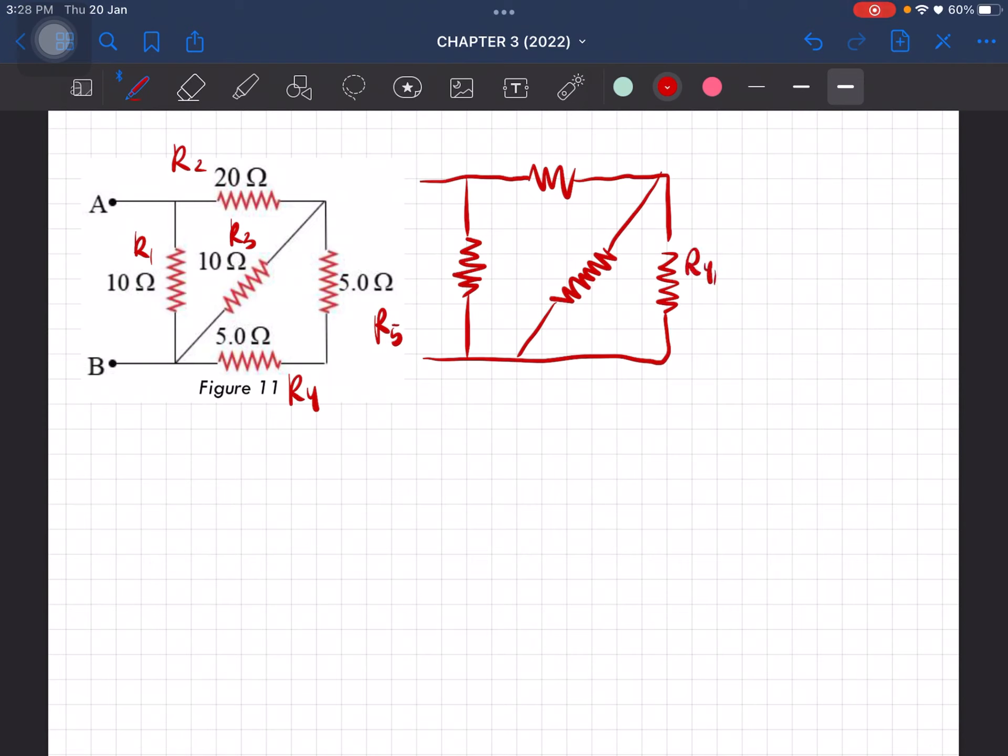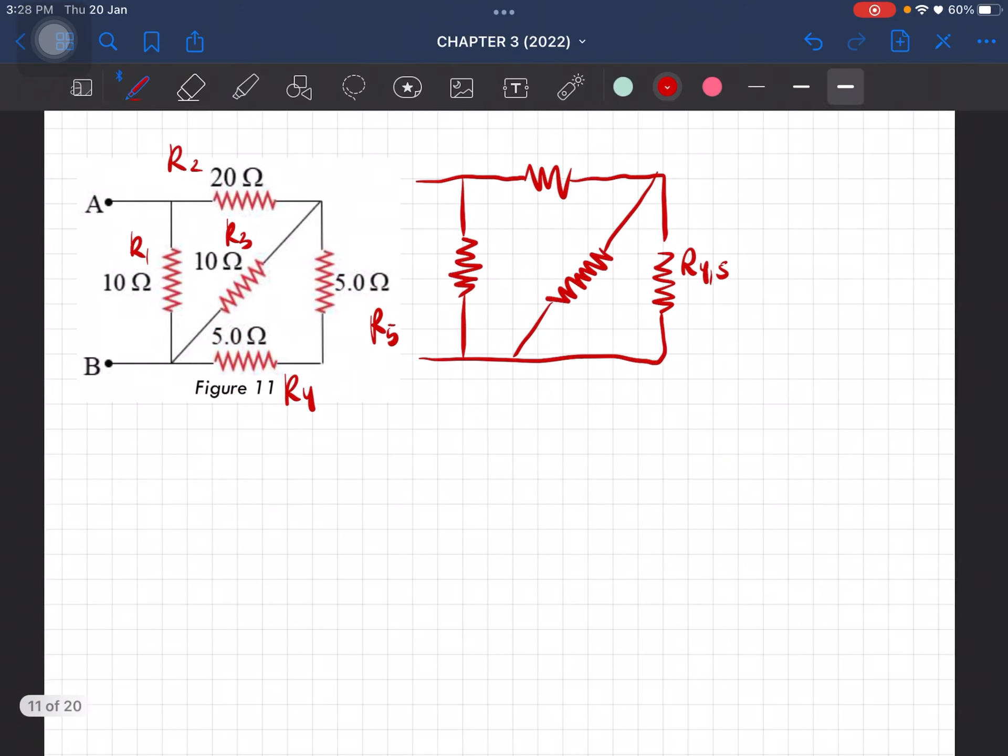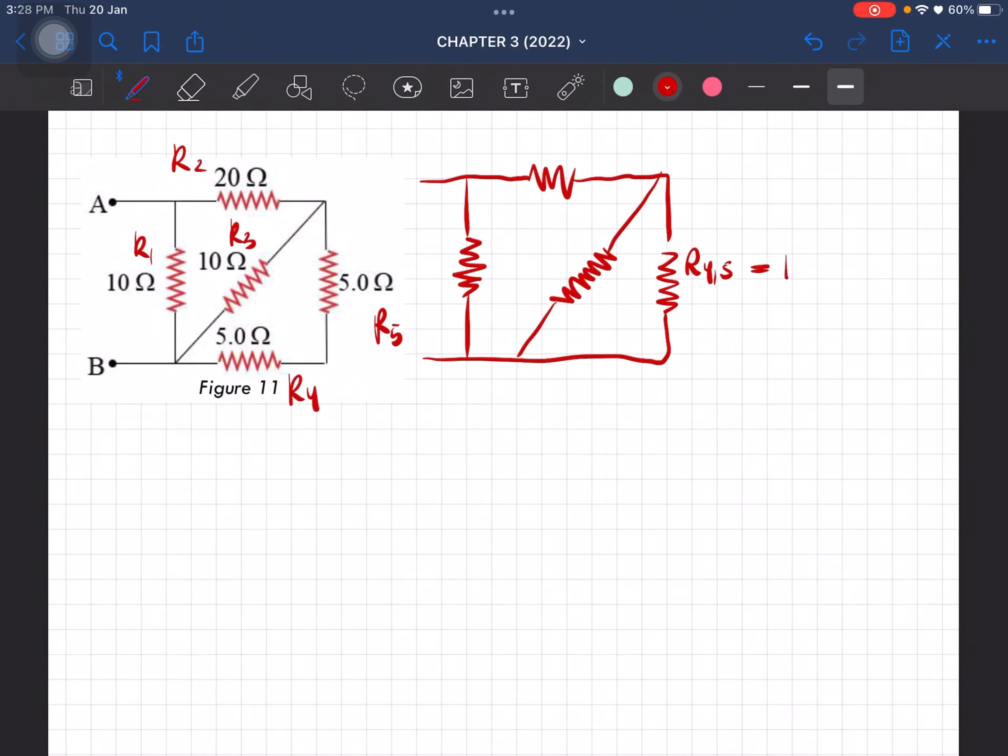So this is R4, R5. So this is initially connected in series. So this is gonna be equal to 5 plus 5, which is equal to 10 ohm. So now we are gonna simplify between these two.